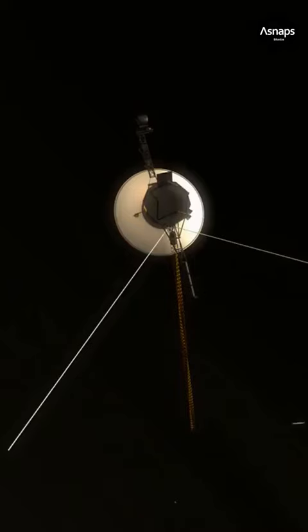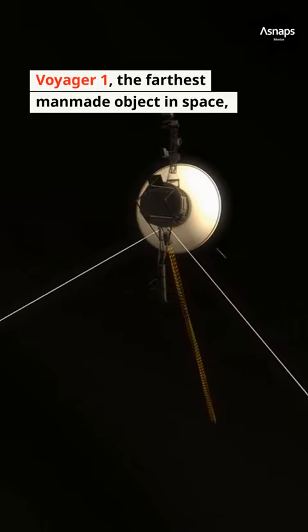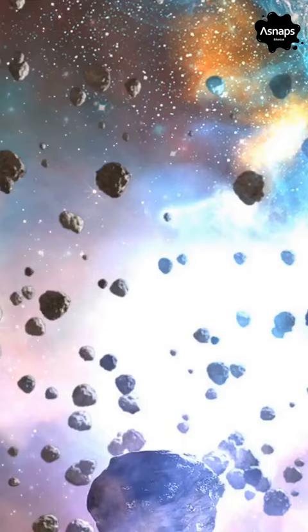Voyager 1, the farthest man-made object in space, traveling at a million miles per day, will take 300 years to reach the inner boundary of the Oort Cloud.